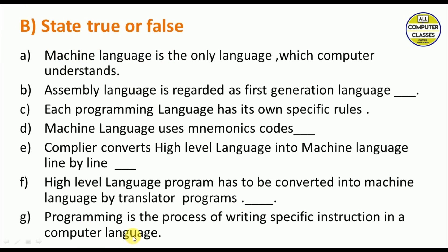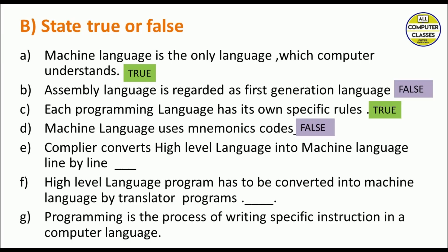The first statement: machine language is the only language which a computer understands — this is true, as machine language is zero and one. Assembly language is regarded as the first generation language — this is false, it is not the first generation language. Each programming language has its own specific rules — this is true.